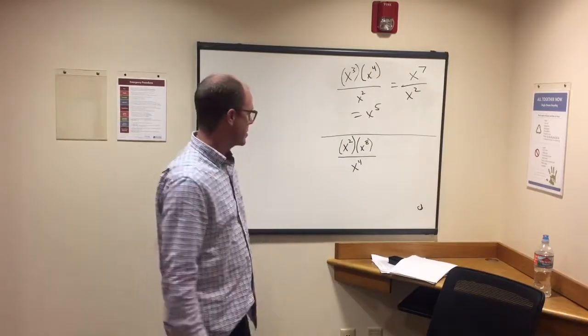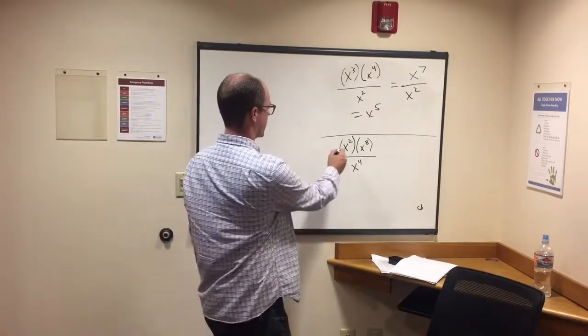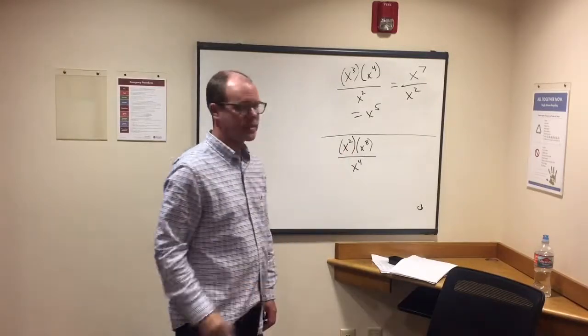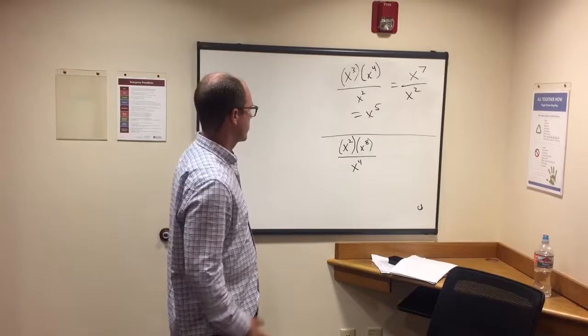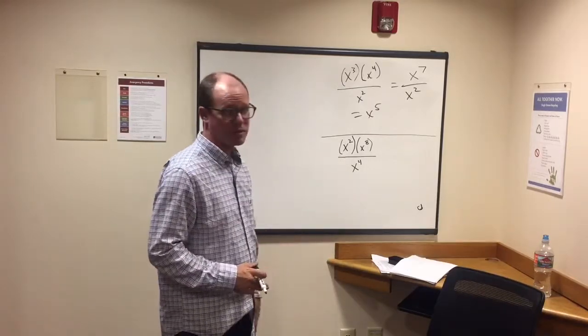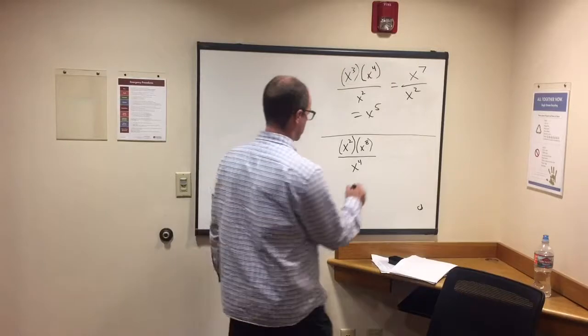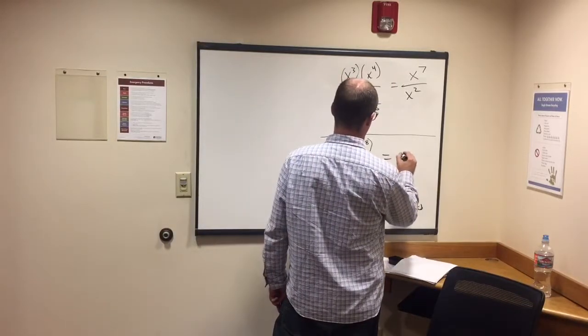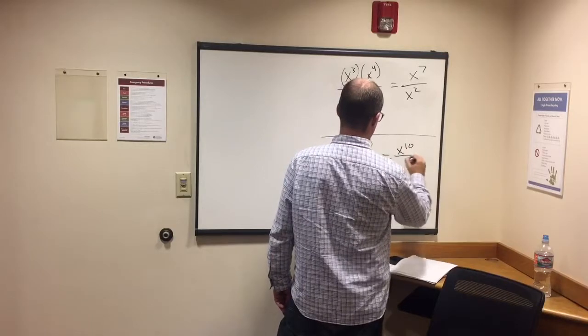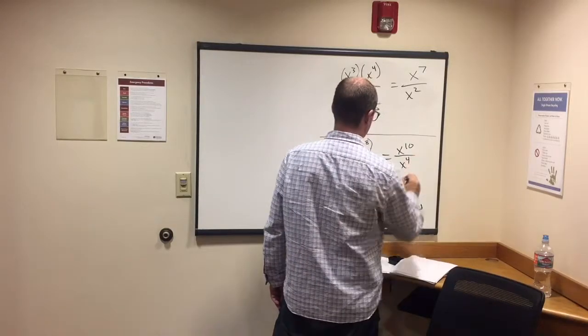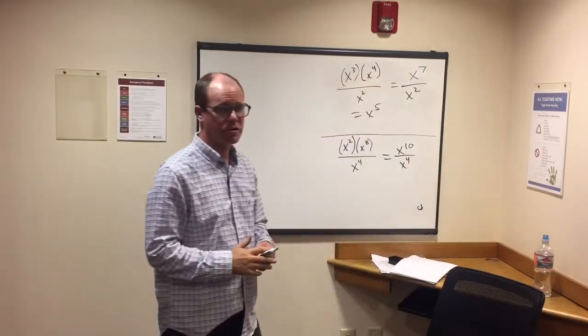Let's do another one. Same basic setup. We have x squared times x to the eighth divided by x to the fourth. So remembering, when we're multiplying exponents with the same base, we add two plus eight is ten, x to the tenth, all over x to the fourth.